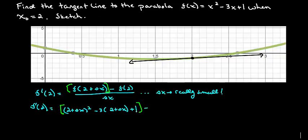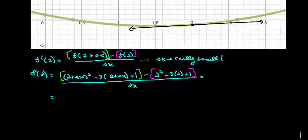Then we need to subtract off f(2). Well, f(2) is 2² - 3(2) + 1. That is this piece right here. And then, of course, we divide by that really small number that's not 0, delta x.